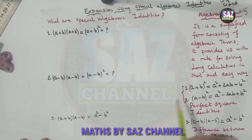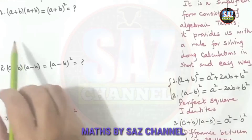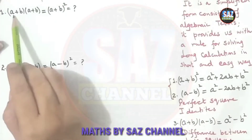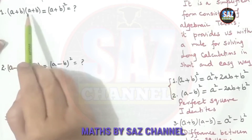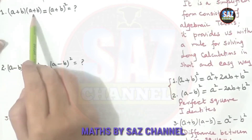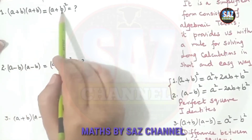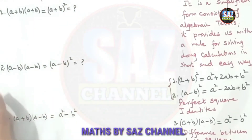How do these identities come? Let's come to the discussion. Recall that when we multiply (a + b) by (a + b), in short form it can be written as (a + b) whole square.